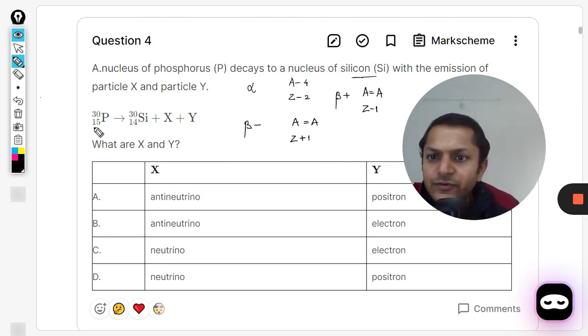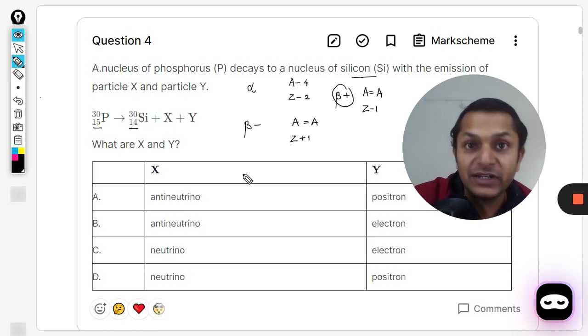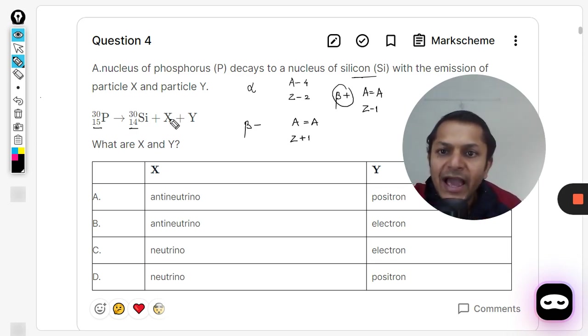Now in this case we can clearly see that the atomic number is decreasing by one but the mass number is constant. So mass number is constant, atomic number is decreasing, it means you're talking about beta positive. So X should be beta positive, it means that electron with plus one, it is also known as positron.